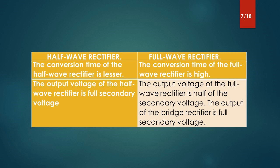The output voltage of the half-wave rectifier is the full secondary voltage. The output voltage of the full-wave rectifier is half of the secondary voltage. The output of the bridge rectifier is the full secondary voltage.